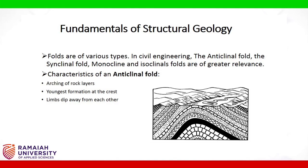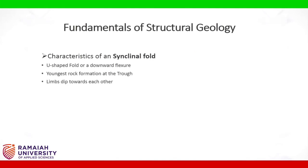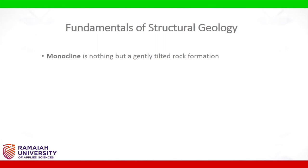Characteristics of an anticlinal fold: arching of rock layers, youngest formation at the crest, limbs dip away from each other. Characteristics of a synclinal fold: U-shaped fold or a downward flexure, youngest rock formation at the trough, limbs dip towards each other. Monocline is nothing but a gently tilted rock formation.